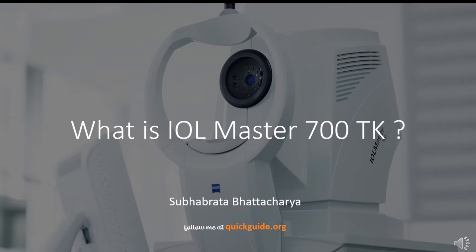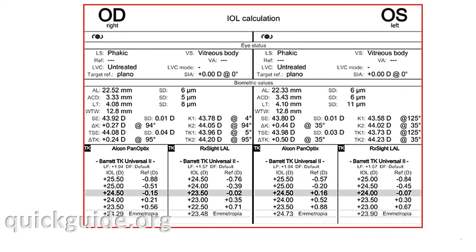TK is not net corneal power. By net corneal power we mean: say the anterior cornea is 48 diopters and the posterior cornea is minus 6 diopters — hypothetically. The cornea is meniscus in shape, so the posterior corneal power negates the anterior corneal power. In this case the net corneal power would be 42 diopters, but TK is not that.